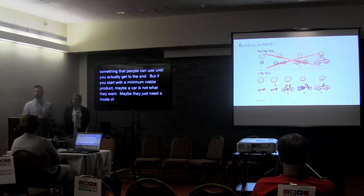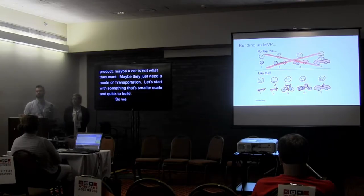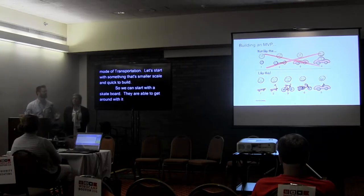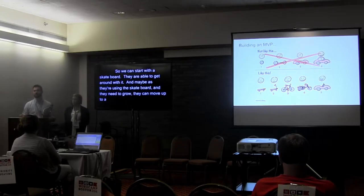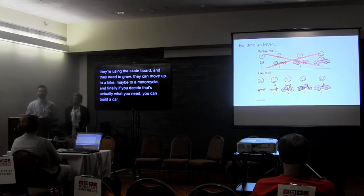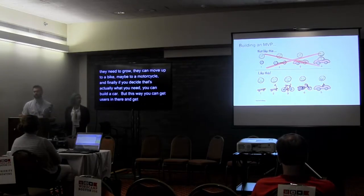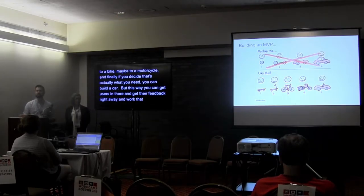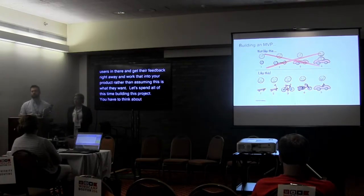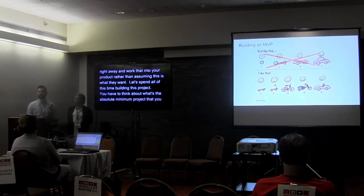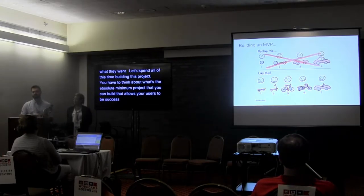Whereas if you start with a minimum viable product — maybe a car isn't actually what they need, what they need is a mode of transportation — let's start with something smaller scale. Something quick to build, something you can get them using right away. So you start with a skateboard. They're able to get around with it. Then as they're using the skateboard and need to grow, they move up to the bike, maybe to a motorcycle, and then finally if you decide that's what you need, you can build a car. This way you can get users in there and get their feedback right away, rather than assuming this is what they want.